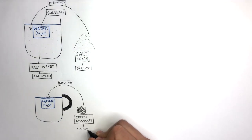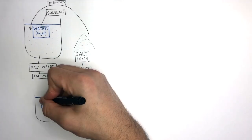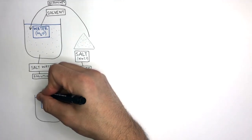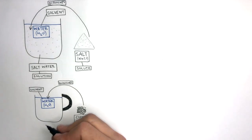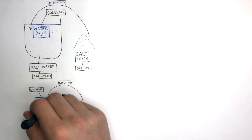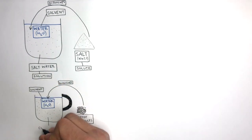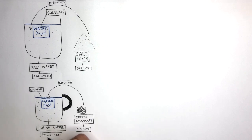The coffee is the solute because it is the substance which dissolves in the solvent. The water is the solvent because it is the liquid in which the solute dissolves in. The coffee dissolved in the water forms the cup of coffee, and this is the solution — the mixture of the solvent and the solute, in this case the water and the coffee.